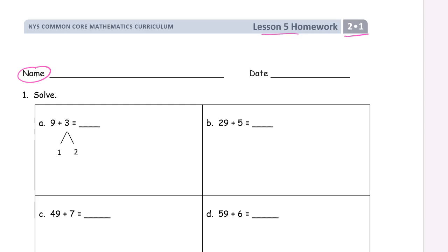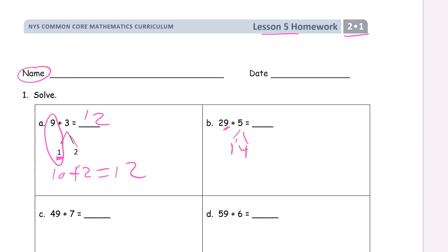Here's the first one. They've got us started by making a number bond out of the three for a one and a two, and they're looking for that one because we want to make ten with a nine. So we have ten plus two, which equals twelve. So if we look at b, we use the same trick. We have a nine for the ones digit there, so we need one more to get this to thirty. So we need one here and four there to make a number bond for the five. So the twenty-nine and the one makes thirty, and then we have this four — thirty-four.